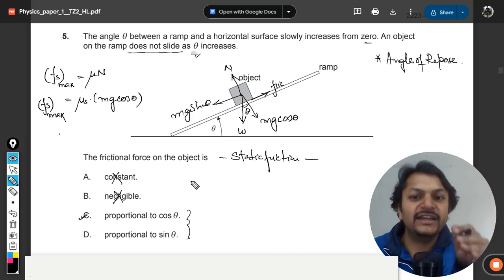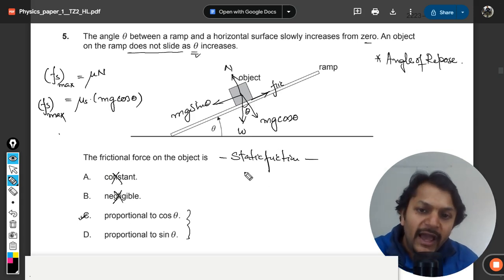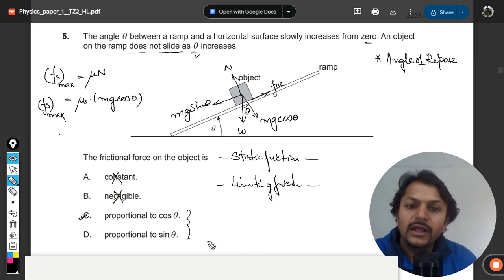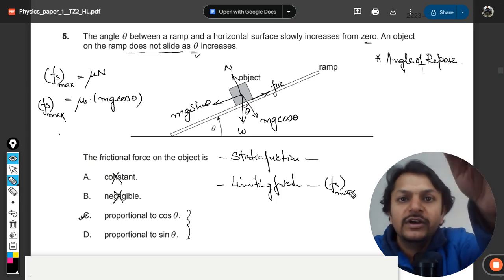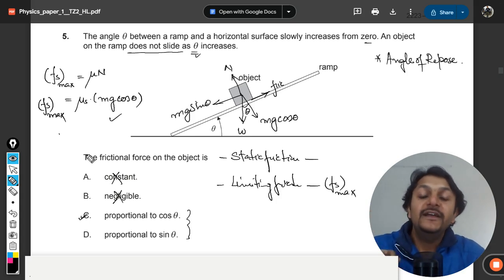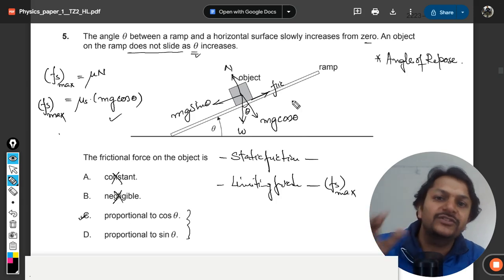This is the exact case for the static friction. And there is another friction which is known as limiting friction. Limiting friction is the maximum possible value of friction between the two surface. That is given by this, so this is the maximum possible value of friction.